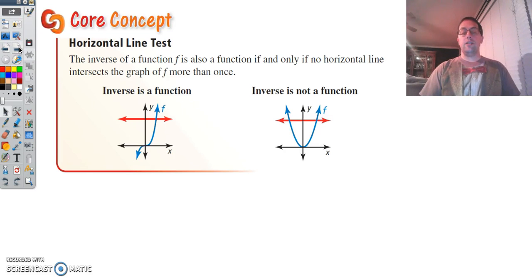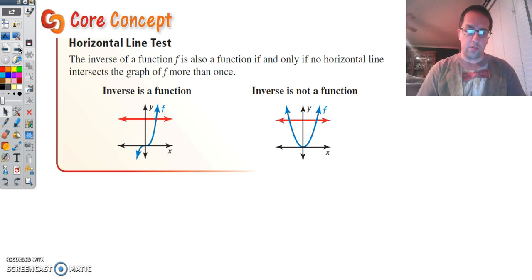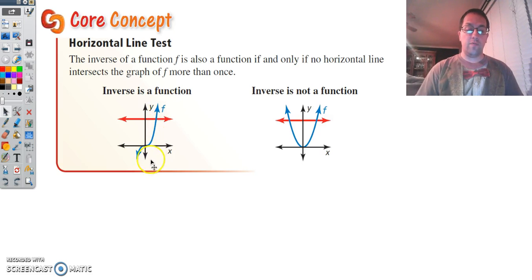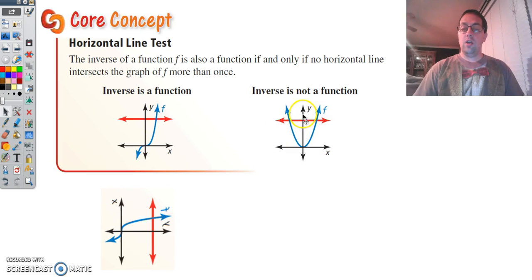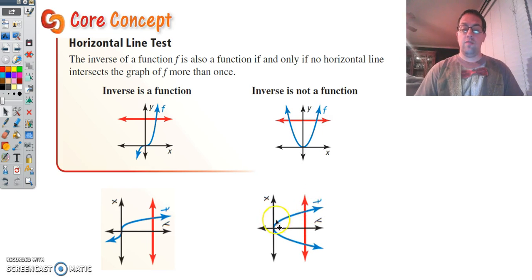Horizontal line test. This is a method we can use to test whether the inverse will be a function without having to graph the inverse, because sometimes the inverse of a function is not itself a function. The horizontal line test works a lot like the vertical line test — you're just moving a horizontal line to see if it touches the graph more than once. If it doesn't, it passes. Here you see this passes the horizontal line test, so the inverse will pass the vertical line test and the inverse is a function. But a parabola does not pass the horizontal line test, which means its inverse will not be a function — and you can see the inverse does not pass the vertical line test.